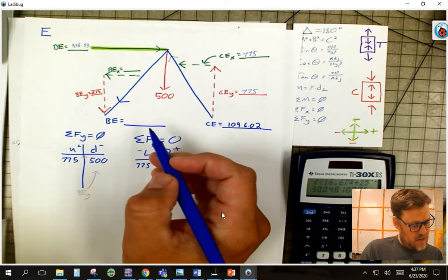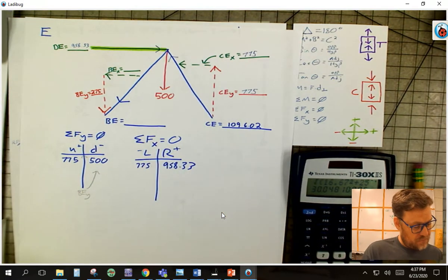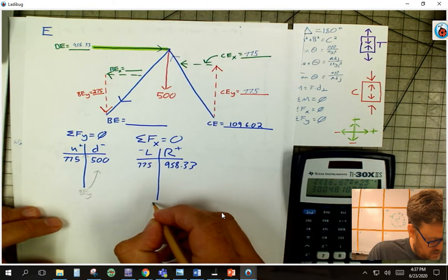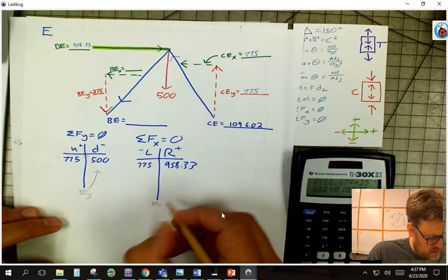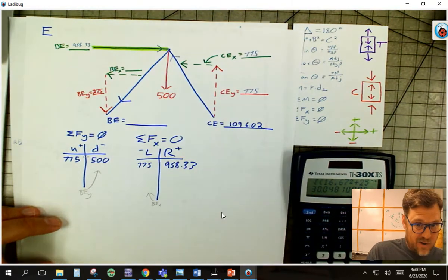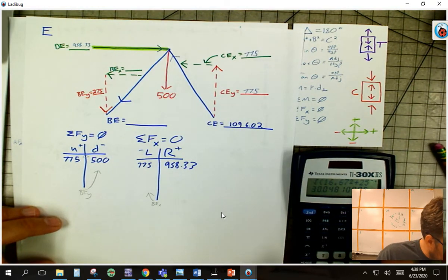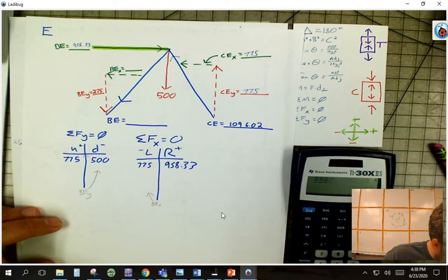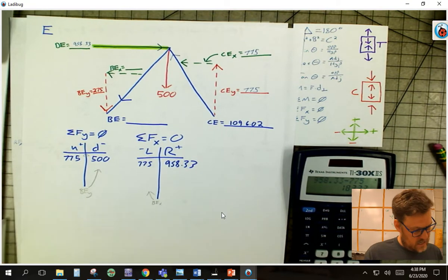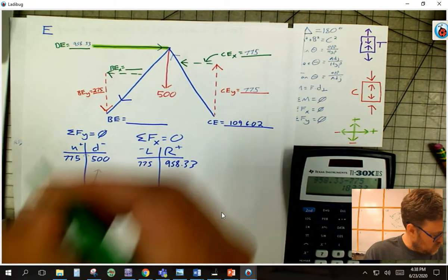Then I've got BE and the X is left. If I didn't know which way it was going to go, I'd go here and I'd say, well, where's it got to go, right? It's got to go here, which matches up with the arrow that we already have. So chances are good. So I'm going to not do that math. I'm going to go 958.33 minus 775, and I get 183.33.